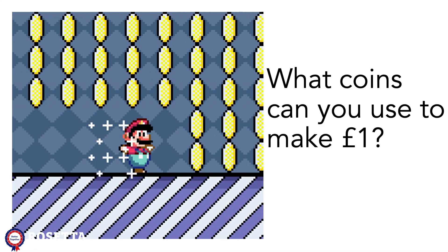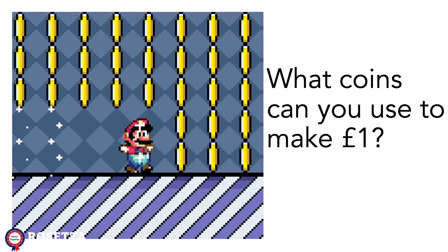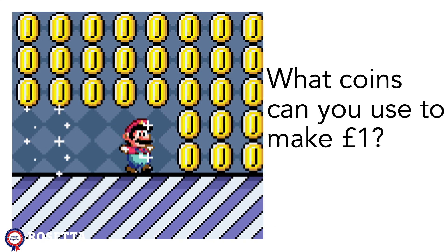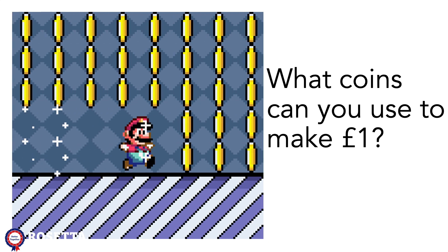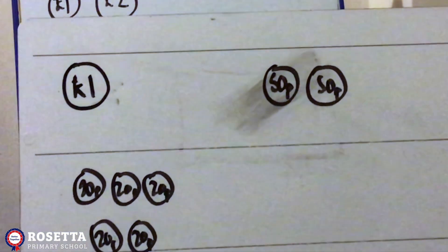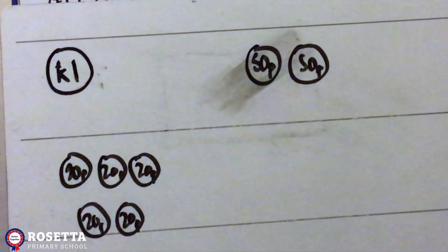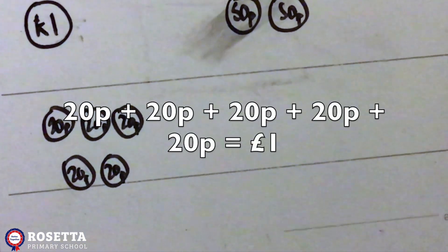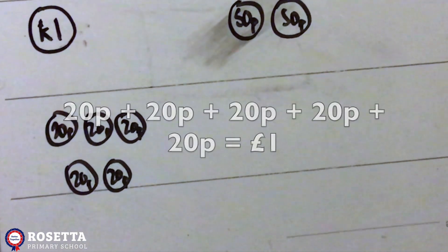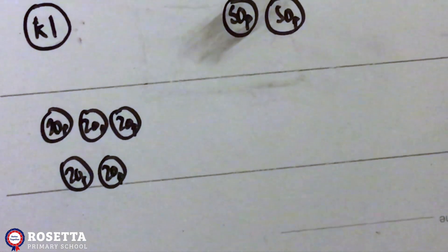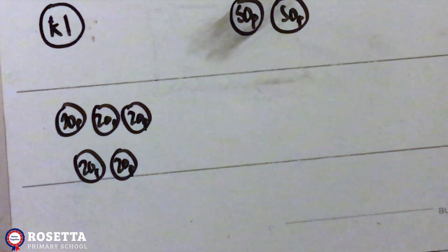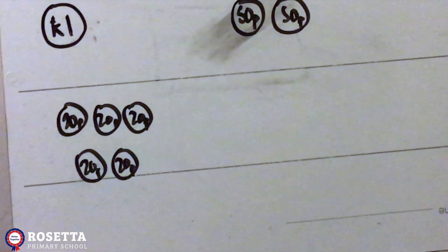I want you to show me how you would make one pound. How can we make one pound? I've got one pound coin to make one pound. I've got two fifty pences to make one pound. And I've got twenty pence, twenty pence, twenty pence, twenty pence, twenty pence — five twenty pences to make one pound. So I know there's loads of other ways — what other ways did you figure out?